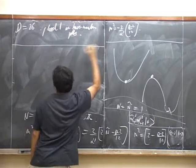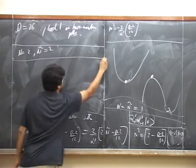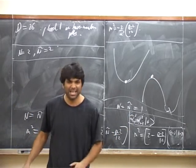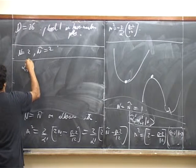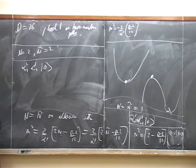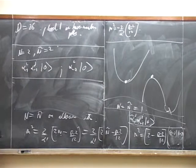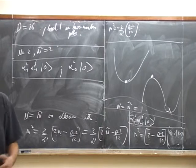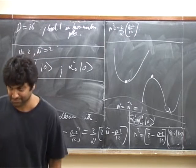Let's work with level 2: N equals N-tilde equals 2. The left-moving states are: alpha^i_{-1} alpha^j_{-1} acting on the vacuum, and also alpha^i_{-2} acting on the vacuum. You might think that since we didn't have things transforming in representations of SO(d-1) at level 1, it would be a miracle if level 2 transformed properly. Let's see if this miracle is indeed true.